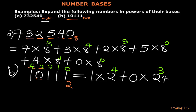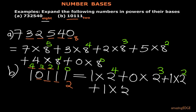The next digit is 1, assigned the power of 2, so we have 1 times 2 to the power 2. The next digit is 1, assigned the power of 1, so we have 1 times 2 to the power 1. The final digit is 1, assigned the power of 0, so we have 1 times 2 to the power 0. As you can see, we count the powers down until we get back to 0.